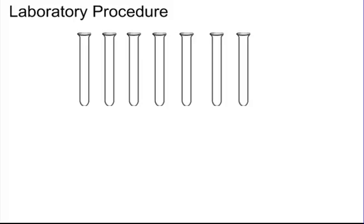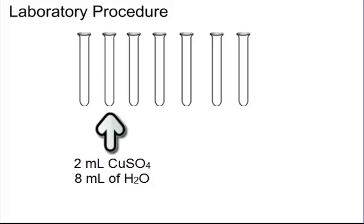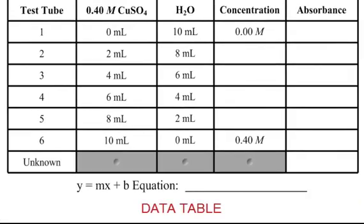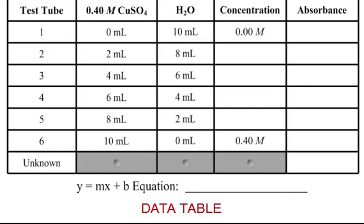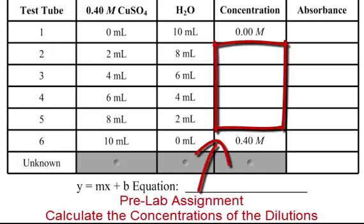In test tube one, put 0 milliliters of 0.40 molar copper sulfate and 10 milliliters of water. In the next, put 2 milliliters of copper sulfate and 8 milliliters of water, and continue according to the data table. You'll have six test tubes for dilutions and one for the unknown. Label your test tubes before you begin, and note that concentration increases with more copper sulfate added. You must calculate the concentration column before walking into the lab.